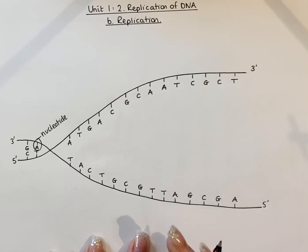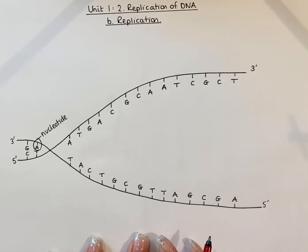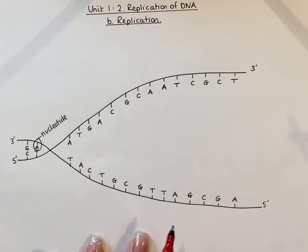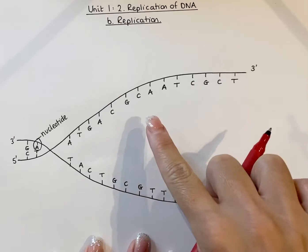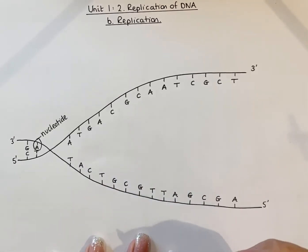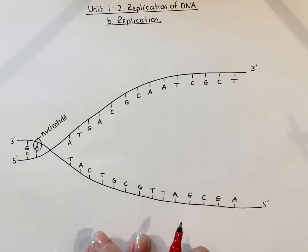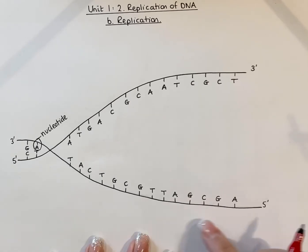In terms of the stages of replication, the very first stage has already been shown here, which is where the DNA molecule has been untwisted. It used to be a DNA double helix, but now it is open. So the DNA molecule is untwisted, and then the hydrogen bonds between those bases have broken, which has allowed the strands to separate — which is what you see here.